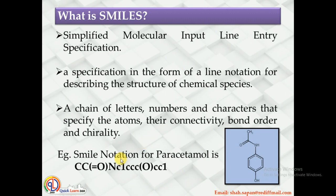Let us see this example: the SMILES notation for paracetamol. The structure of paracetamol can be simply written as CC(=O) and C1CCCOC C1, where both O's are in brackets. This represents branching where one carbon is connected with oxygen via a double bond, and another carbon is connected to oxygen via a single bond. We will come to the detail of how these SMILES notations are given.